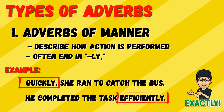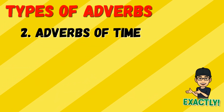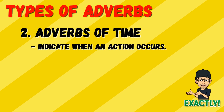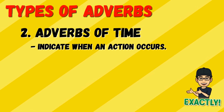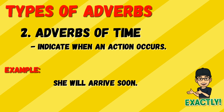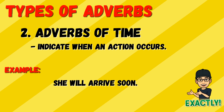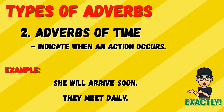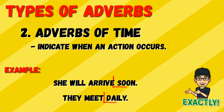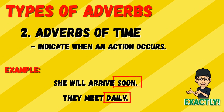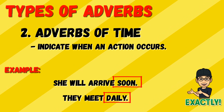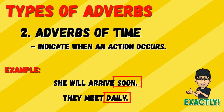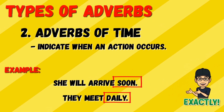Next is adverbs of time. These adverbs indicate when an action occurs. For example: 'She will arrive soon' and 'They meet daily.' Soon and daily are adverbs of time because they answer the question 'when' — when will she arrive, and when will they meet.